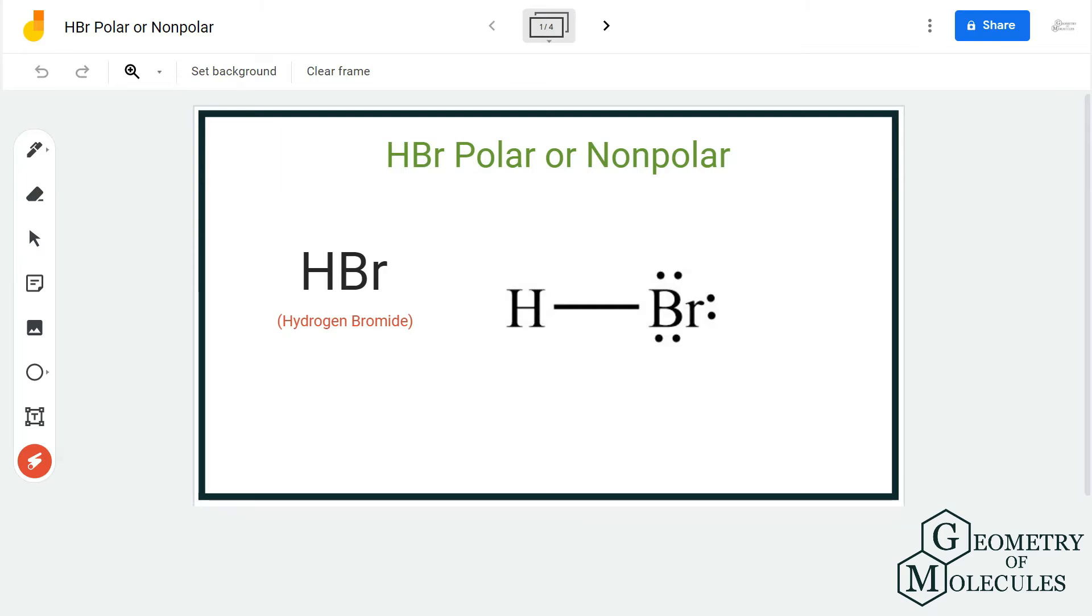If you look at its shape, it's linear because there are only two atoms involved. However, looking at the electronegativities of both these atoms can help us find out if there is a dipole moment in this molecule.